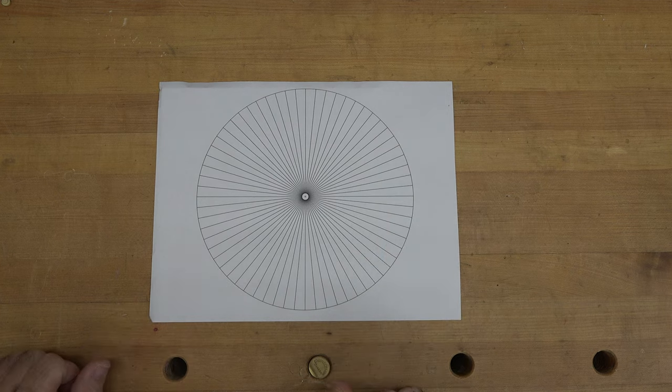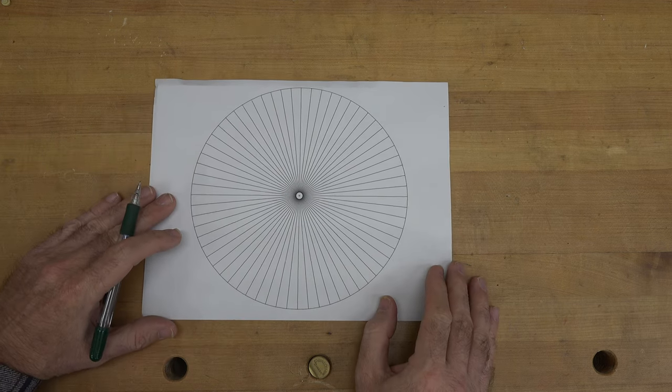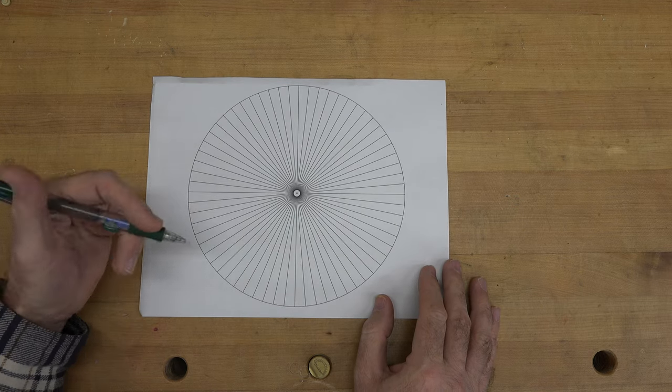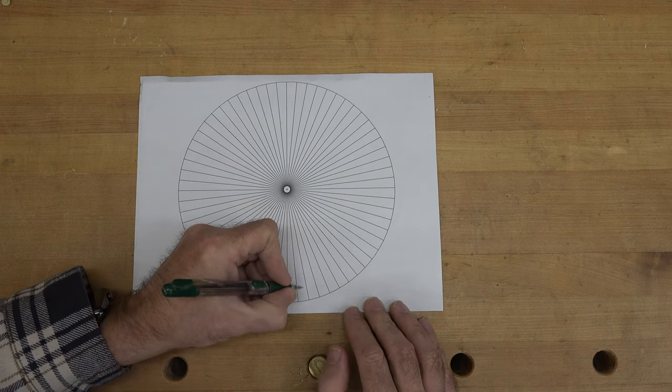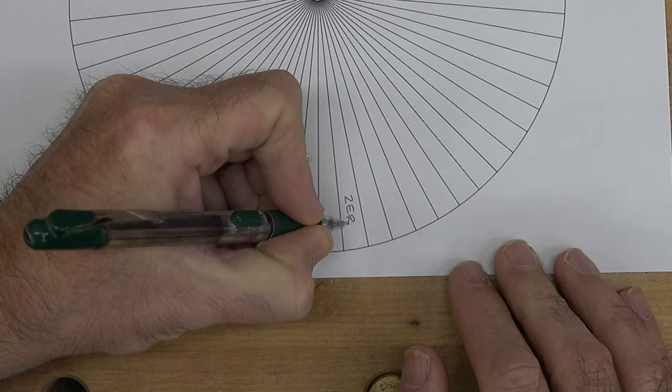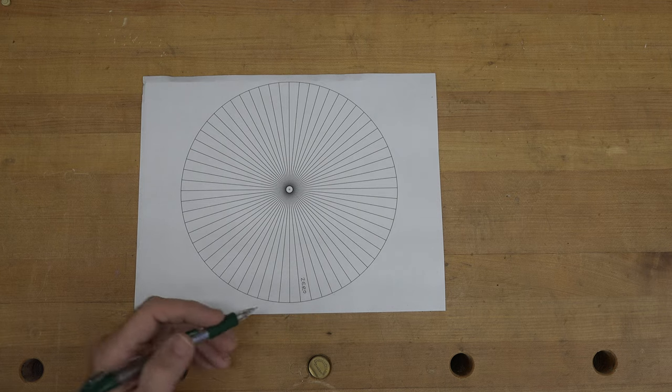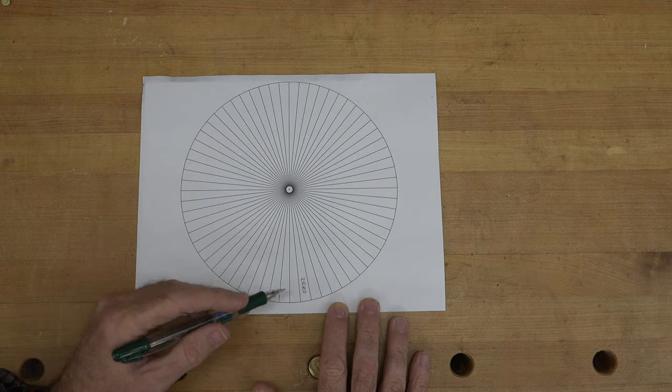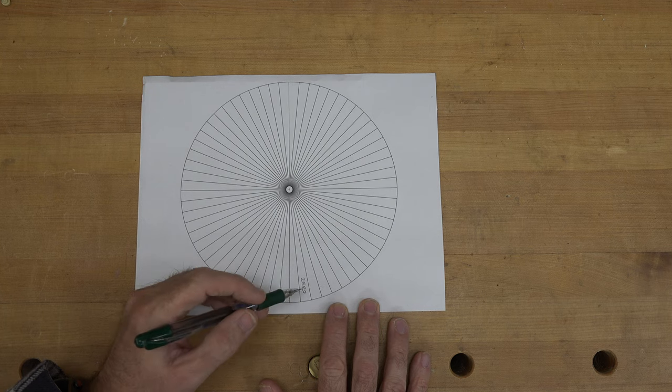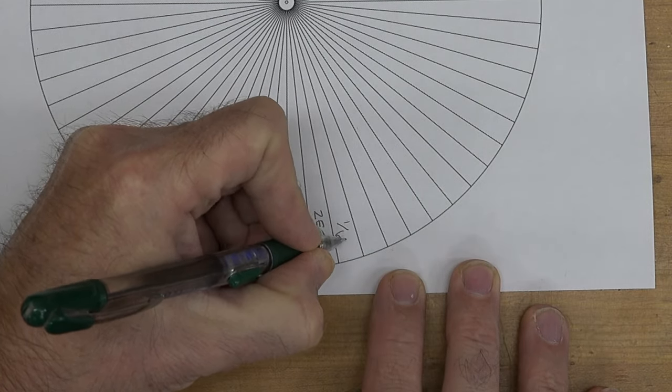You're going to need two of these. The very first thing you want to do is pick any one of these sections, it doesn't matter, that will be your starting point. Let's just say it's this one right here. At this point you want to mark zero in this square because this will be your starting point for all of your calculations. Starting at the next square going counterclockwise around this circle, you now want to mark in the values all the way along, increasing the value each time by 1/64th of an inch.